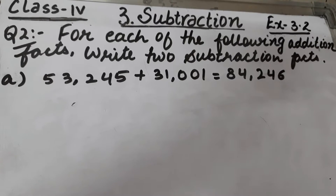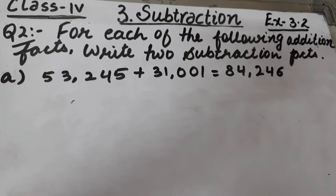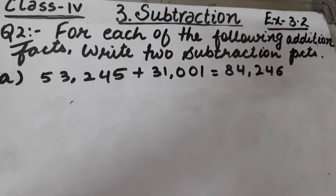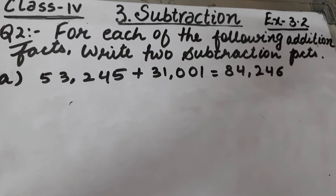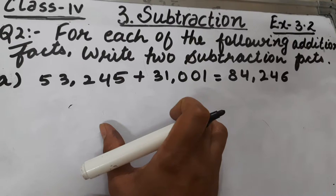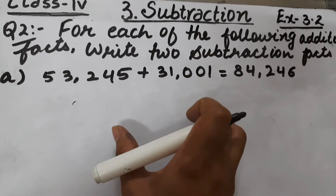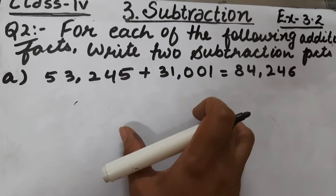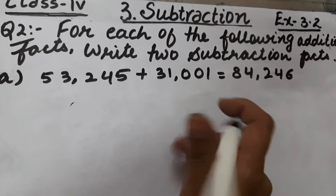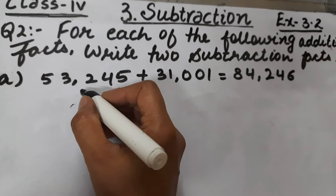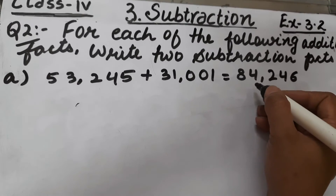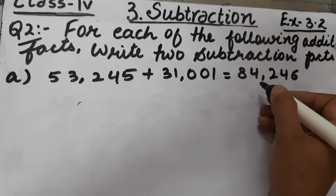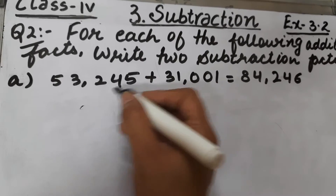Let's start question number 2 of Exercise 3.2. The question is: for each of the following addition facts, write 2 subtraction facts. An addition fact is given to us and we have to write 2 subtraction facts for it. This is our first addend, this is our second addend, and this is the sum or total.